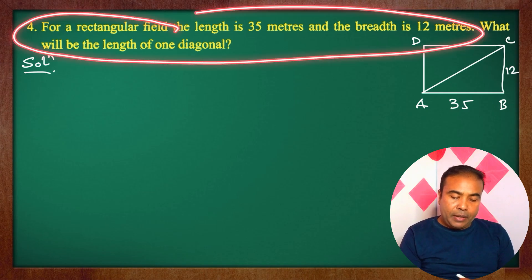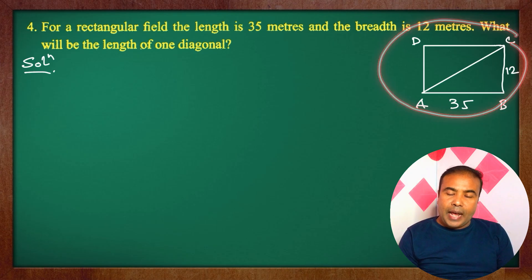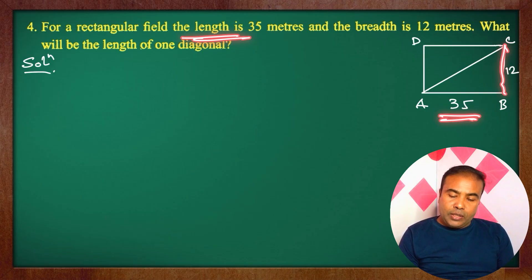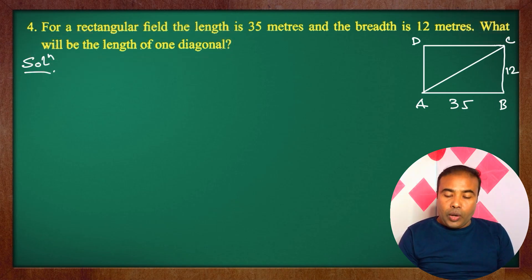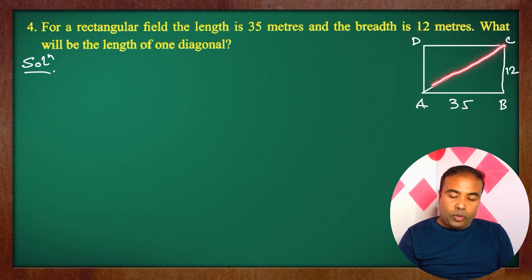First, you will learn the method. I will draw a diagram. The diagram has vertices A, B, C, D. The length is 35 and the breadth is 12. What will be the diagonal? I will draw one diagonal. I know that the diagonal values are the same.